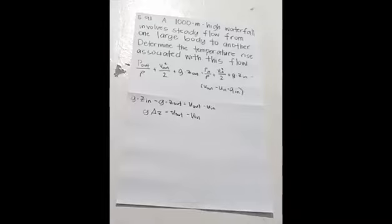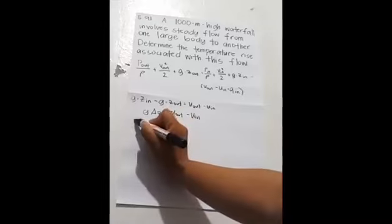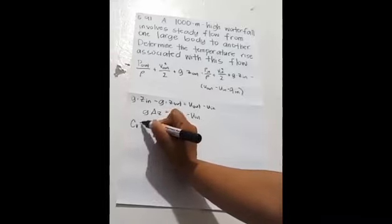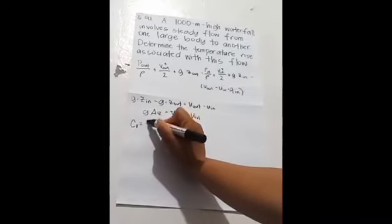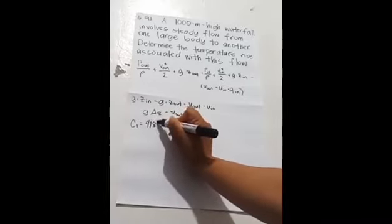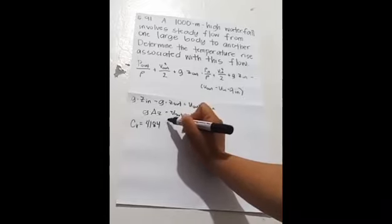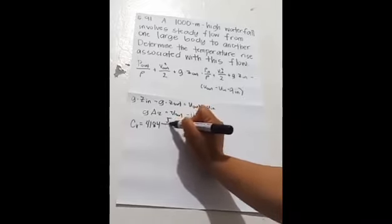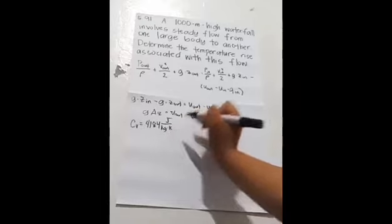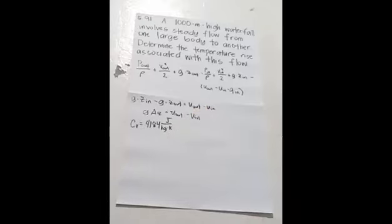Which is determined as C equals 4,184 joules per kilogram times Kelvin.